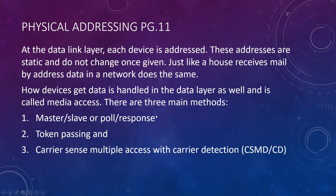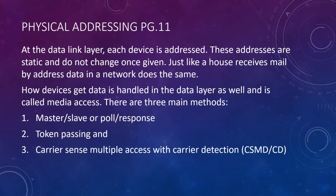How devices get data is handled in the data link layer and is called media access. There are three main methods: master-slave, sometimes called poll response; token passing, or hot potato; and CSMACD — carrier sense multiple access with collision detection — the most common one found in Ethernet networks. They evolve as we go along, with each one addressing the shortcomings of the previous two.